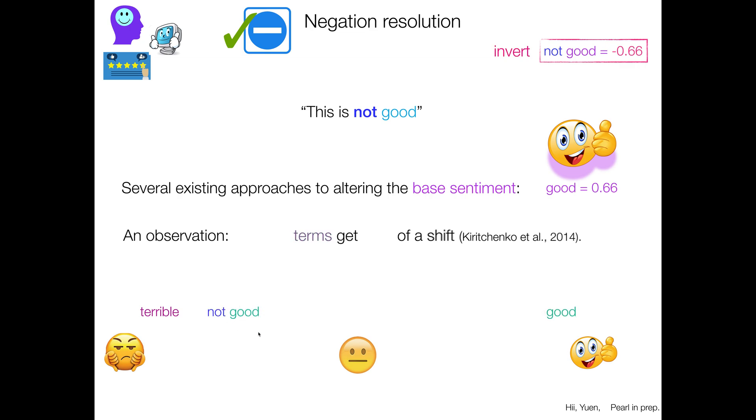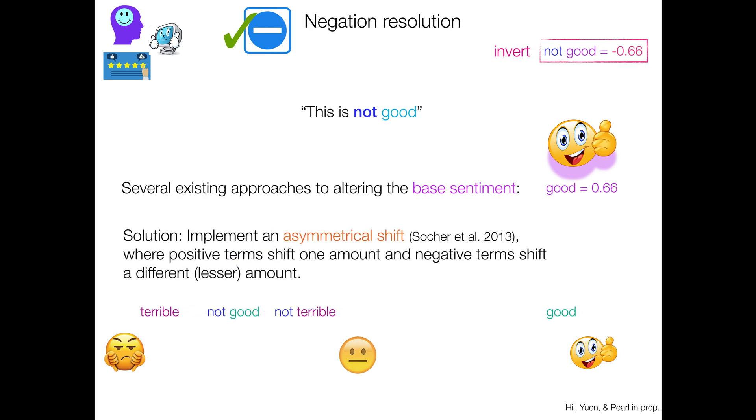Well, negative terms maybe get less of a shift upwards. So terrible, not terrible maybe is still kind of negative. It doesn't get as much of a shift. So this approach of implementing this is asymmetrical shift, you know, an asymmetry in the amount of shifting, where positive terms shift one amount and negative terms shift a different, lesser amount, typically.